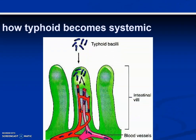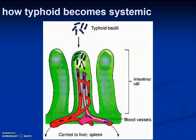Let's look at how typhoid becomes systemic. The typhoid bacilli enter through the intestinal villi, which contain blood vessels for absorption. The bacteria enter these blood vessels and are carried to all parts of the body — that's how typhoid fever becomes a systemic disease.